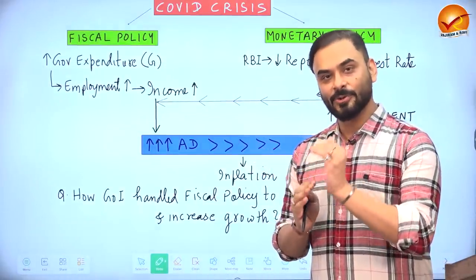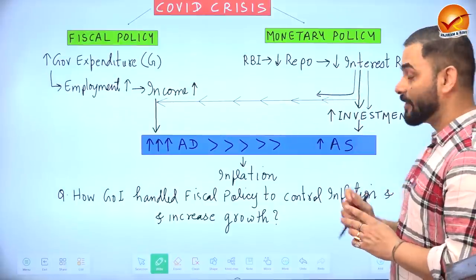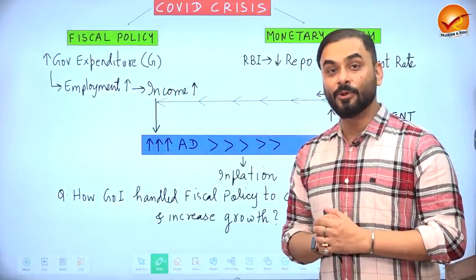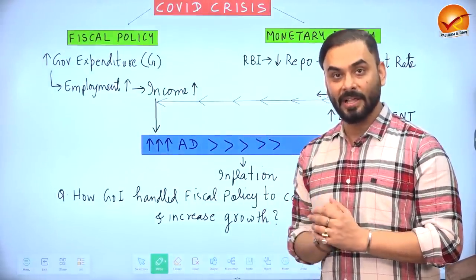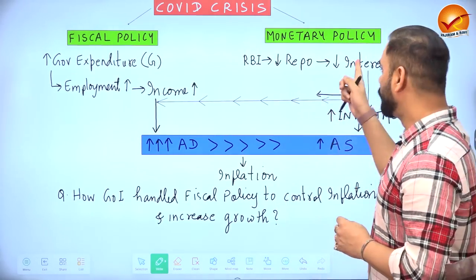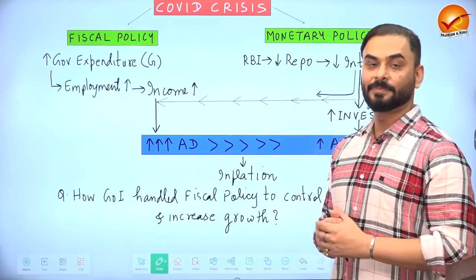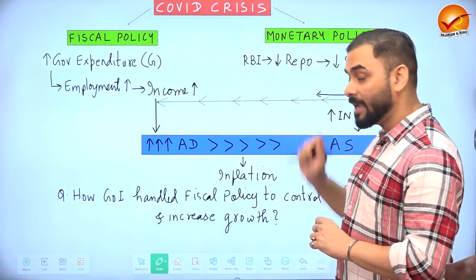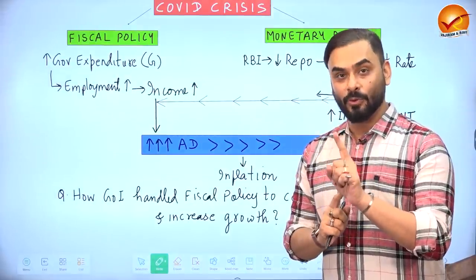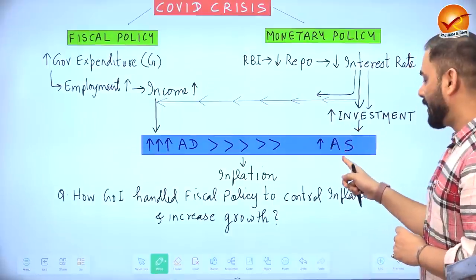The repo rate acts as a signal for the economy. When RBI reduced it, other interest rates also fell. As a result, consumers took more loans to buy houses, cars, refrigerators, and laptops, further increasing aggregate demand. On the other hand, businesses also borrowed more at lower interest rates and invested to increase production of goods and services, boosting aggregate supply.